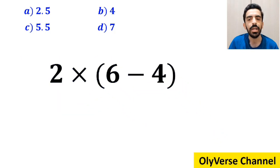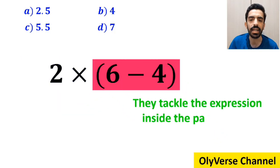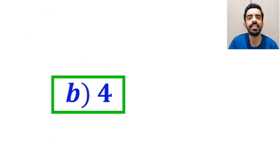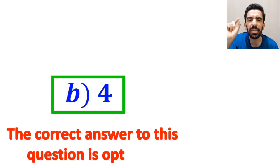In the final step, they tackle the expression inside the parenthesis, and rewrite it as 2 times 2, which ultimately gives them the answer 4. Then, without any hesitation, they quickly say that the correct answer to this question is option B.